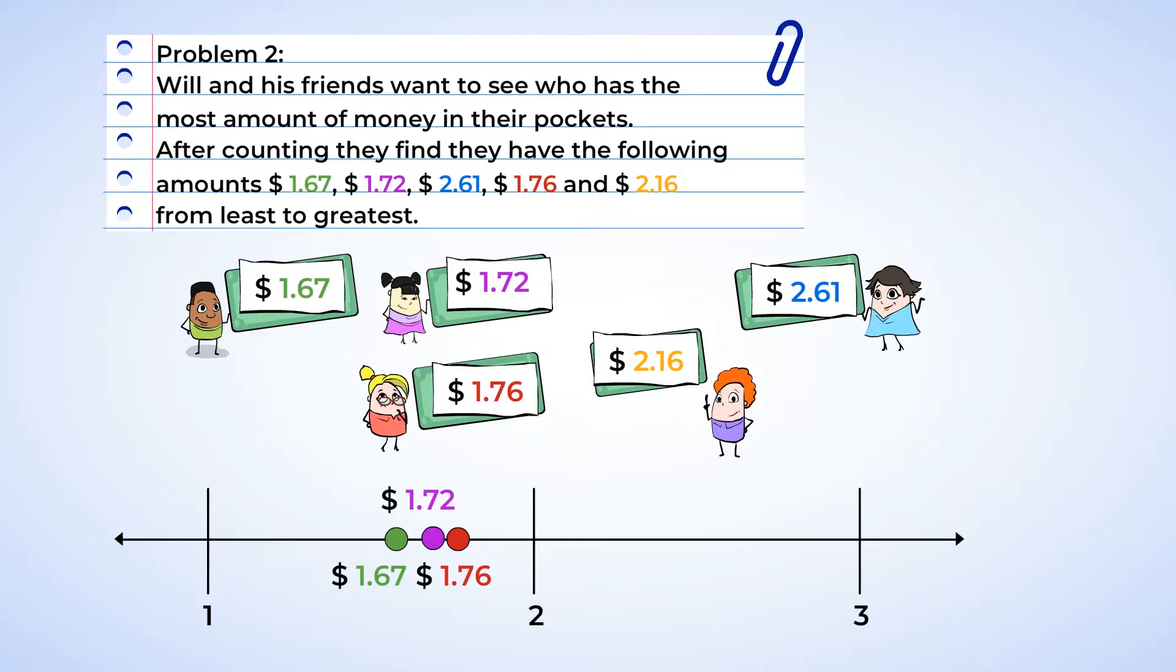Now let's compare Mia and Eric. Well, Mia has a 6 in the tenths place, and Eric has a 1. And since 6 is greater than 1, Mia has more than Eric. And we've got the whole order sorted out. $1.67, $1.72, $1.76, $2.16, and last but not least, $2.61.